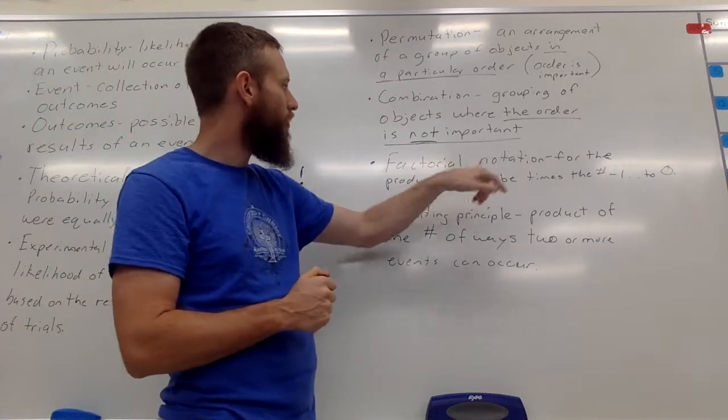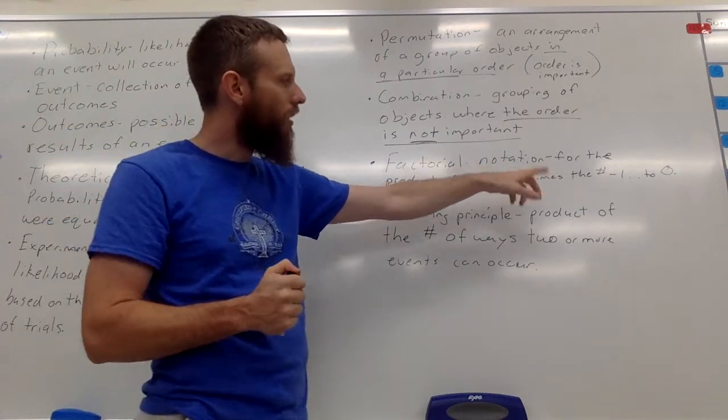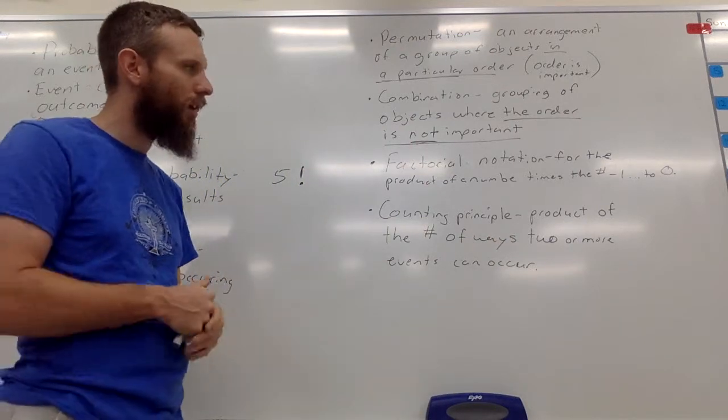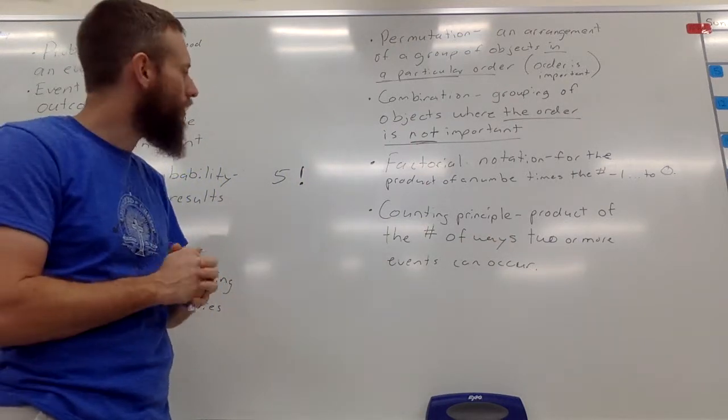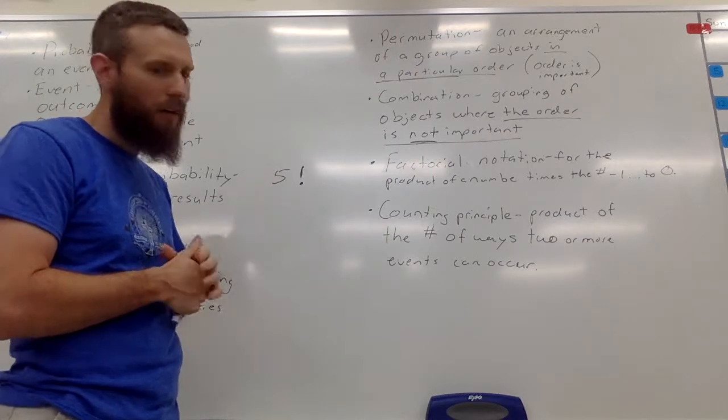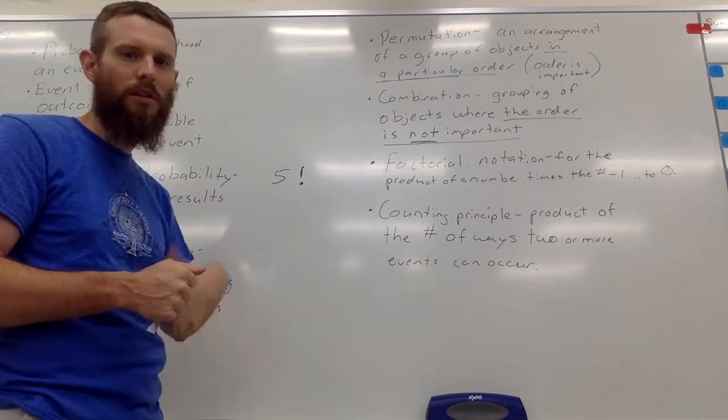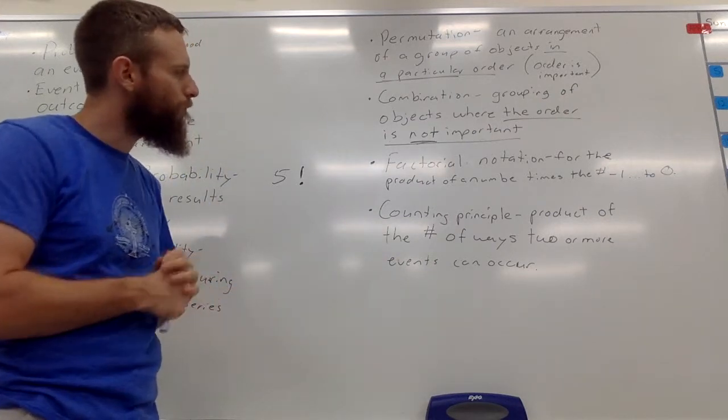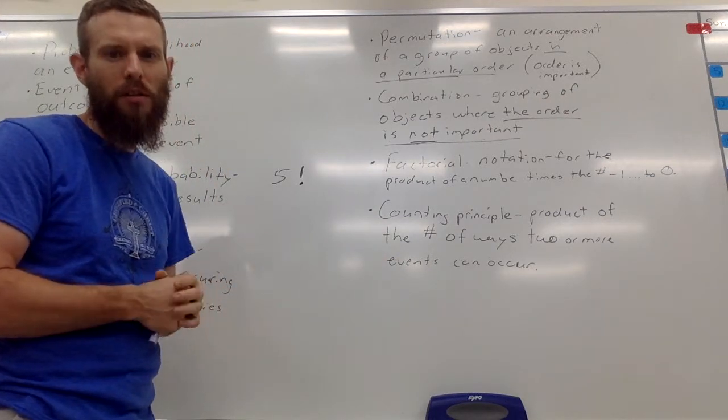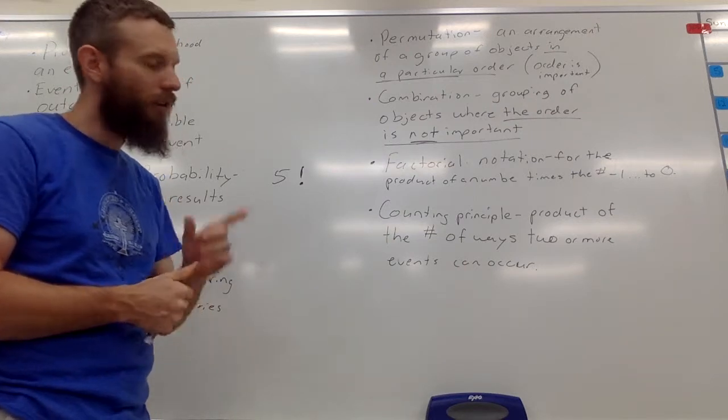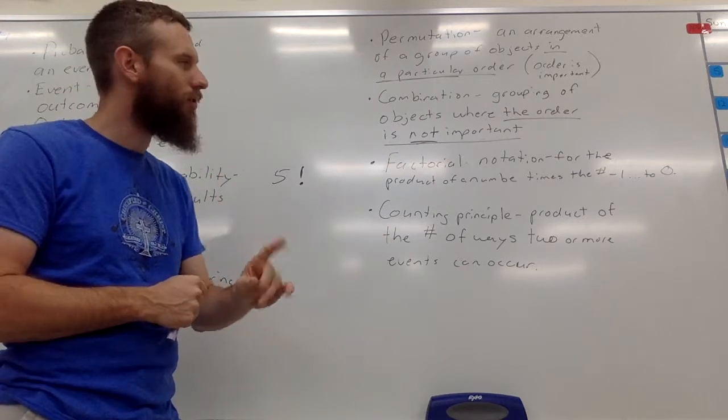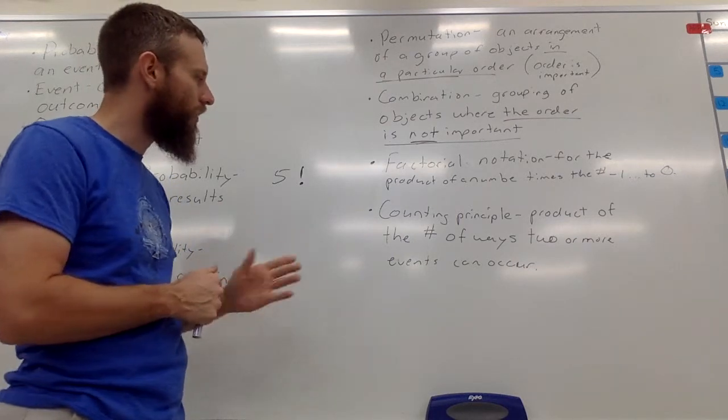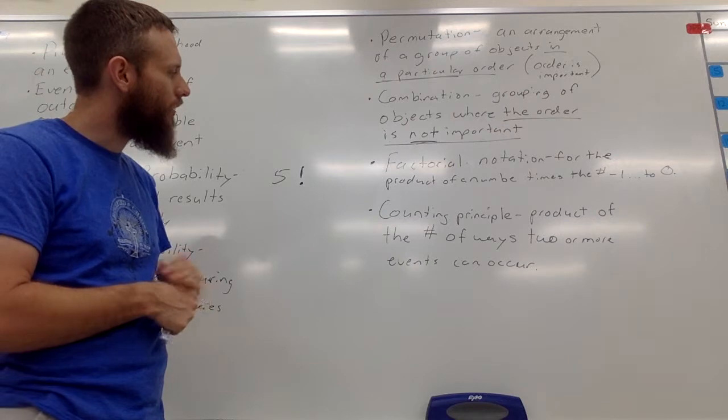Factorial notation for the product of a number times the number minus one, the number minus two, the number minus three until you get to zero. Okay, obviously you don't multiply it with zero because then you'll always get zero. But five factorial or six factorial is six times five times four times three times two times one. Okay, you use that in probability. By the way, just a side note, zero factorial is one. It's kind of an exception to the rule. So make a note of that that zero factorial is one. It's not zero if you have to divide by zero factorial.